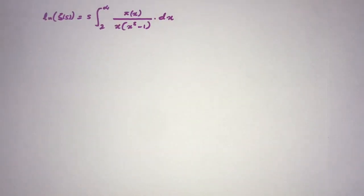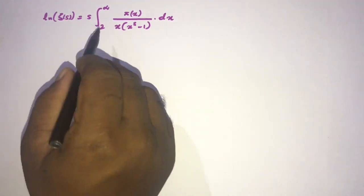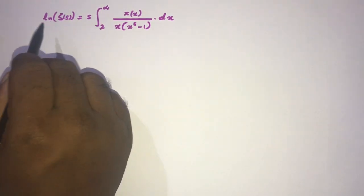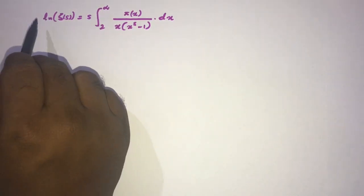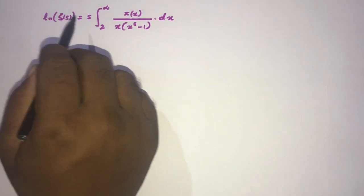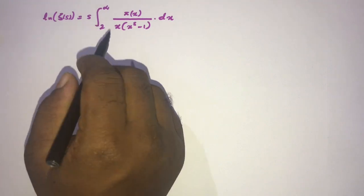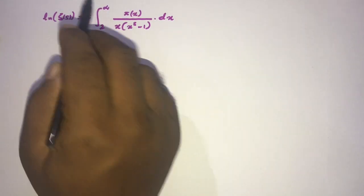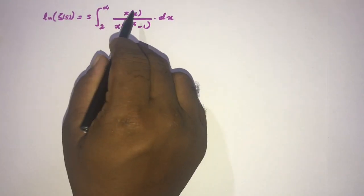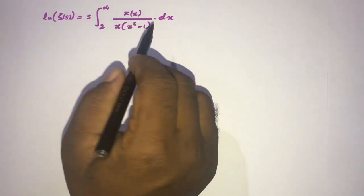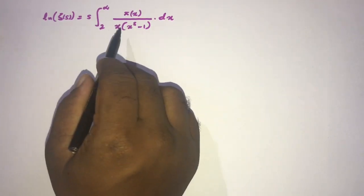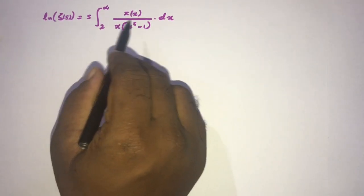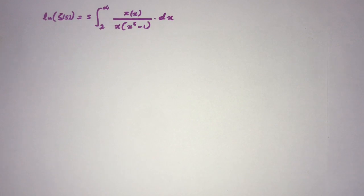Welcome to the mathematics channel. Today we are going to prove this identity: the natural log of zeta of s is equal to s times the integral from 2 to infinity of pi(x) over x times x to the s minus 1, dx, where pi(x) is the prime counting function.